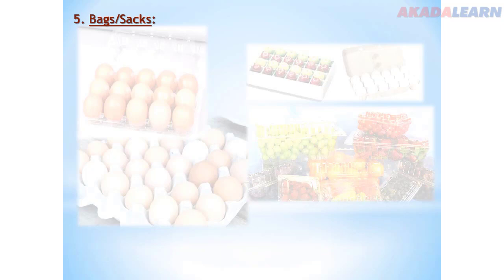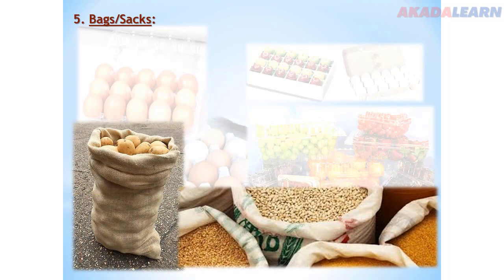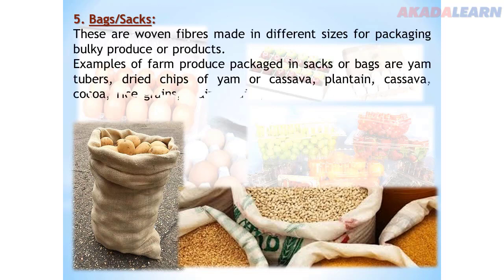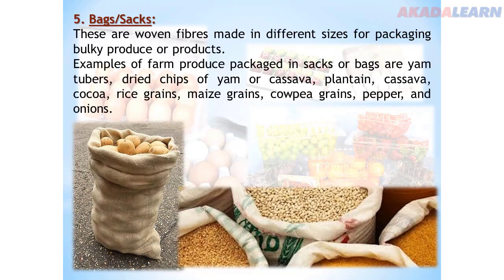Number five: bags or sacks. Bags or sacks are woven fibers made in different sizes for packaging bulky produce or products. They are used to package yam tubers, dried chips of yam or cassava, plantain, cassava, cocoa, rice grains, maize grains, coffee grains, pepper and many more.